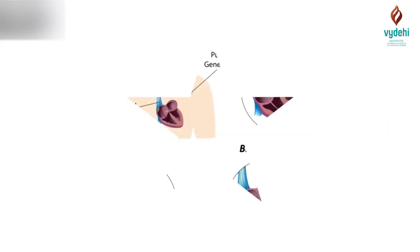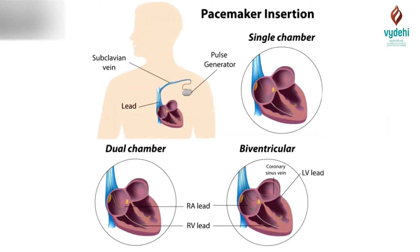For the procedure, we usually enter just below the clavicle and select one of the veins. After all sterile procedures with hemodynamic monitoring, the patient is kept in a sterile condition. It's performed in a CAT lab. A sheath is inserted below the collar bone into a vein — probably the subclavian vein. A sheath introducer is introduced into the vein, and then the lead is passed through the sheath. With the help of CAT lab fluoroscopy, the lead is placed in the RV.